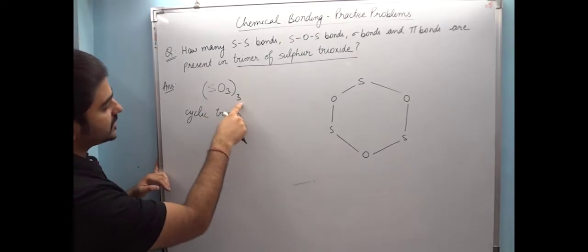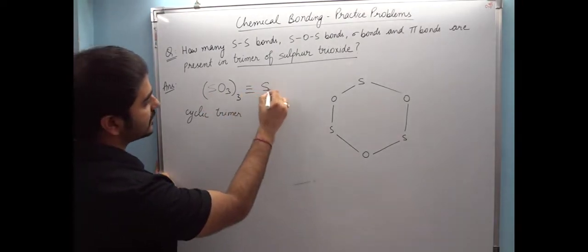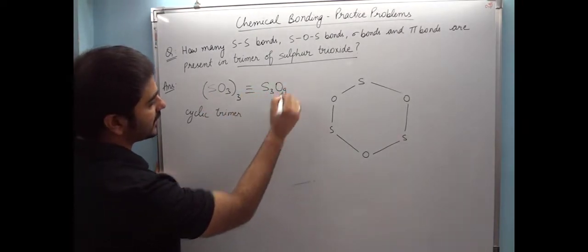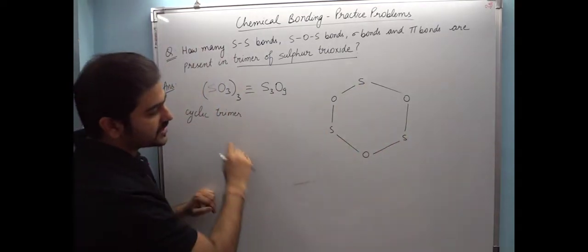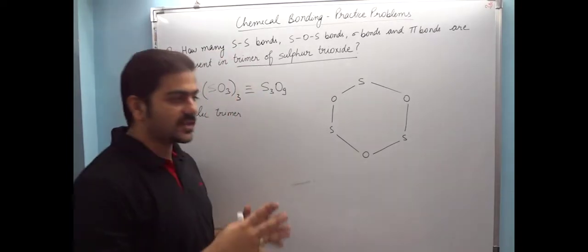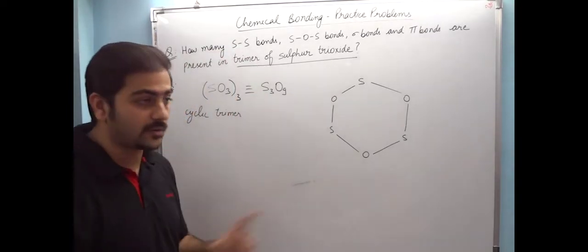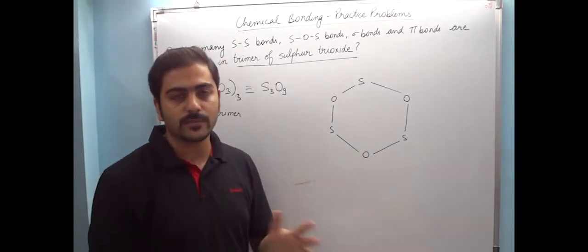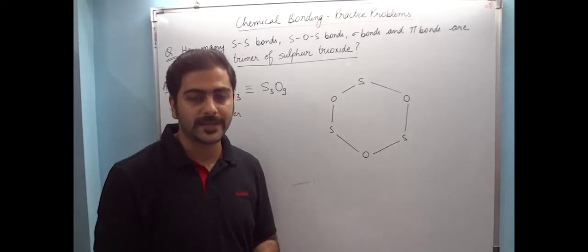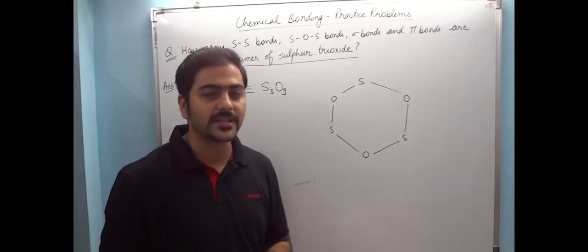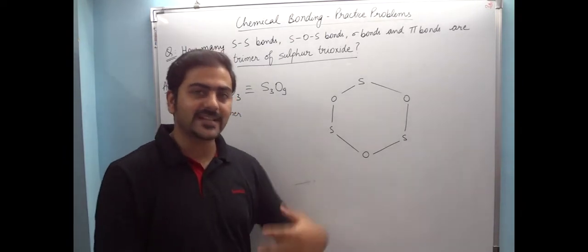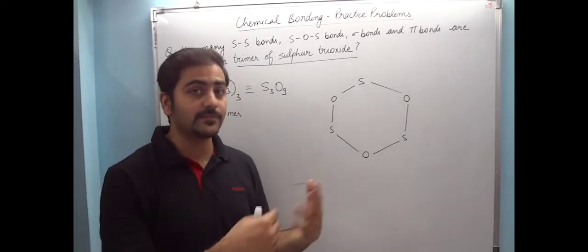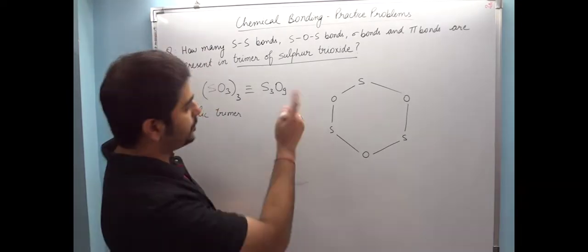Now SO3 thrice means sulfur 3 and oxygen 9 atoms. So 3 sulfur is shown to me, now 9 oxygens. Now 3 oxygens are there. Sulfur can expand its octet. Normally oxygen and sulfur are in the same group. Oxygen makes 2 bonds, sulfur can make 2 bonds.